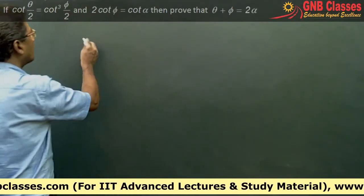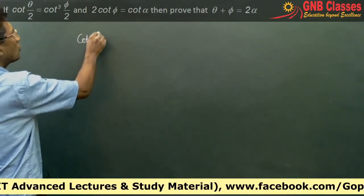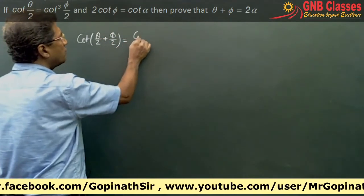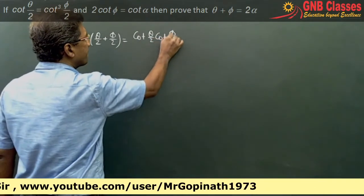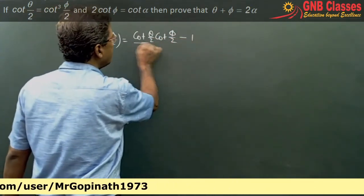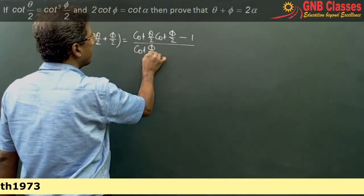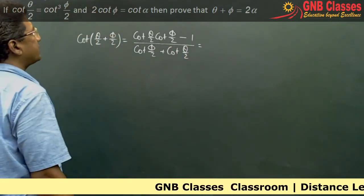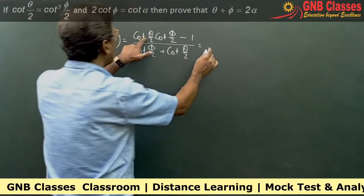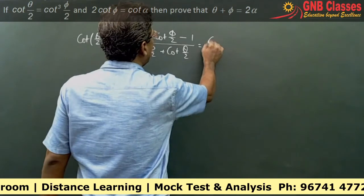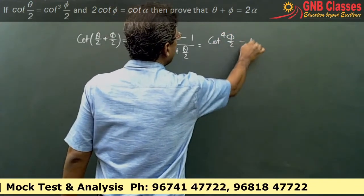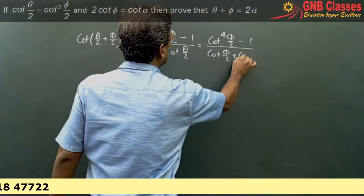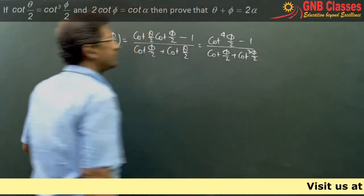In this problem we will start from cot(θ/2 + φ/2). Using the formula cot(A + B) = (cot A · cot B − 1) / (cot B + cot A), and given that cot(θ/2) = cot^q(φ/2), we substitute and get: (cot⁴(φ/2) − 1) / (cot(φ/2) + cot³(φ/2)).